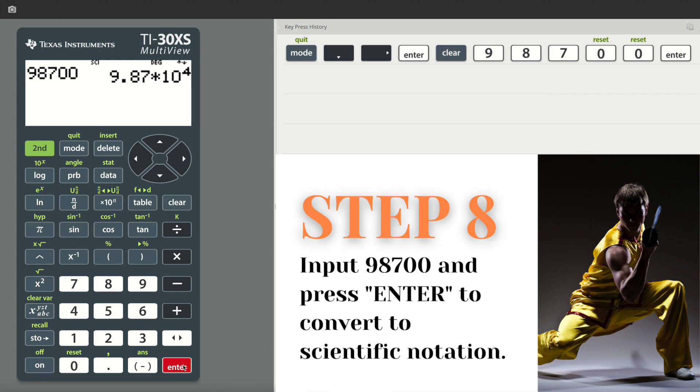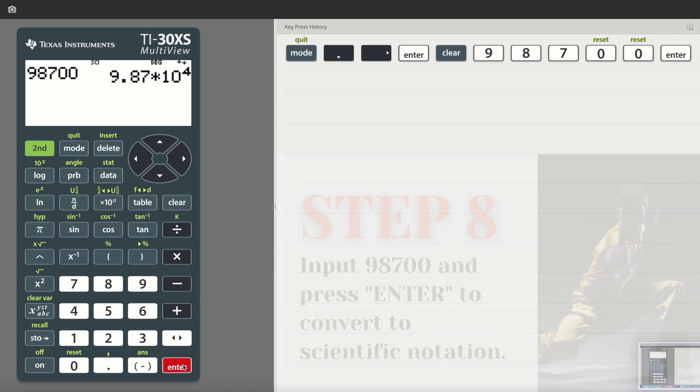Your answer, as we think of it, should say 9.87 times 10 to the fourth. It just converted that into a special kind of number that scientists use, scientific notation.